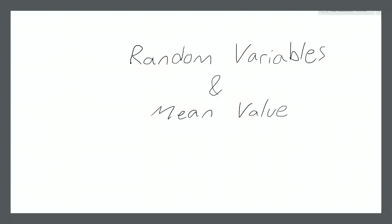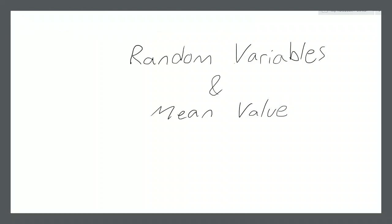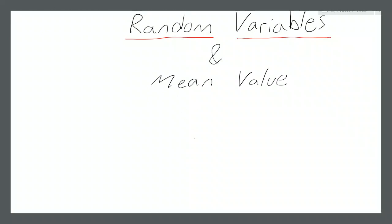To figure out what a random variable is, we're going to talk about two things: what is a variable and what is random? We're going to start with variable — that's the easier thing to explain because people tend to be familiar with it. A variable is a mathematical object that can take on different values. For example, we can write y equals 2x. x and y are variables — we're not assigning a specific value to either of them. They can take on different values but there are certain restrictions.